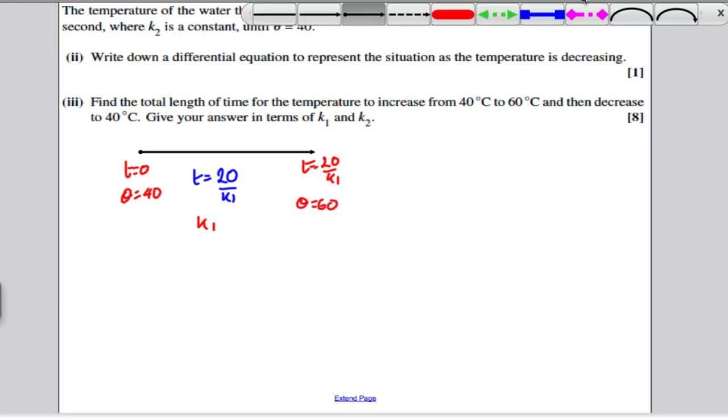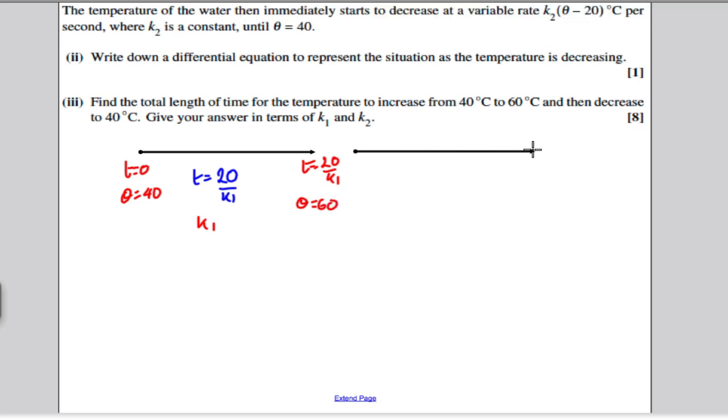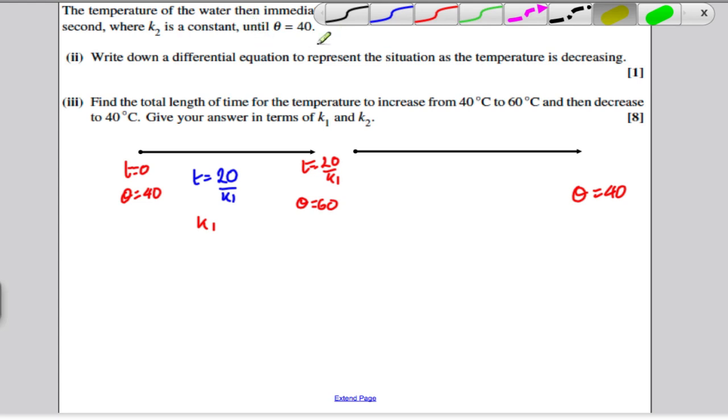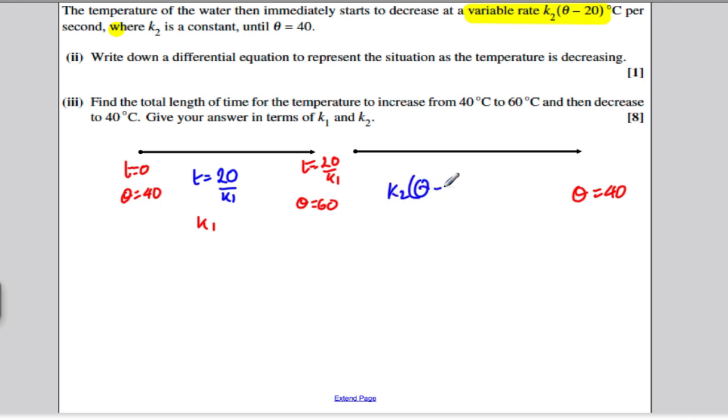But the key difference here is that the rate is decreasing at a variable rate, not at a constant rate as before. And this variable rate is given by K2 theta minus 20.